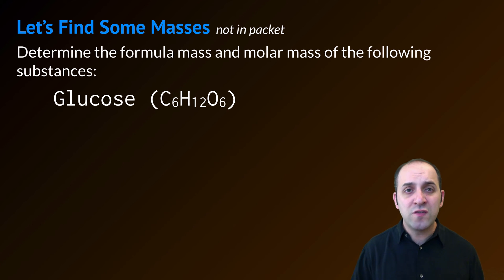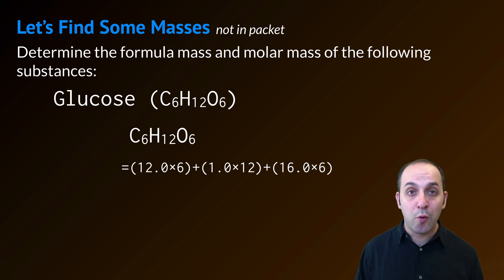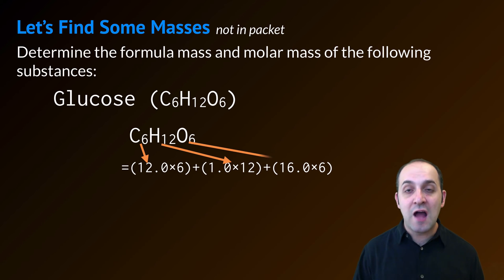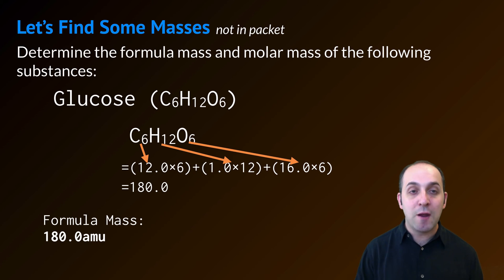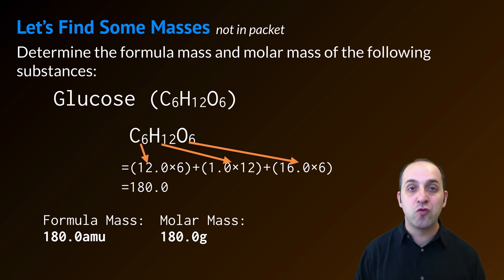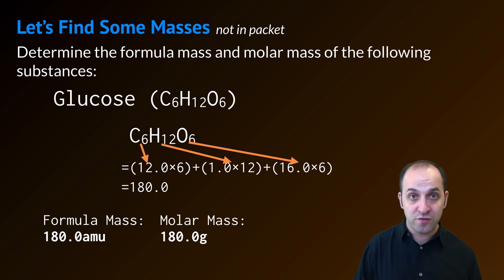Now let's do glucose. I need to find the atomic mass of each element on the periodic table. Carbon is 12.0, multiplied by 6. Hydrogen is 1.0, multiplied by 12. And oxygen is 16.0, multiplied by 6. Doing all this math and adding it together, I get 180.0. As formula mass that's 180.0 atomic mass units; as molar mass that's 180.0 grams. 180.0 grams of glucose is 6.02 × 10²³ molecules of glucose.